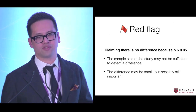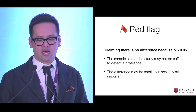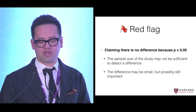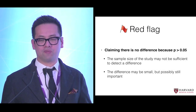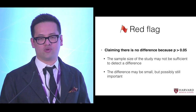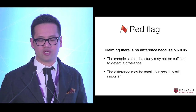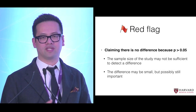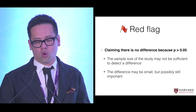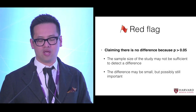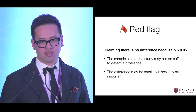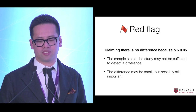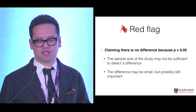Another common mistake is claiming there's no difference because the p-value is greater than 0.05. There are two possibilities: either your sample size is too small and you were not able to demonstrate something that was significant, or the difference is really small but potentially still important — you may have a difference that's not detectable within the population you have, but it is still something of value.